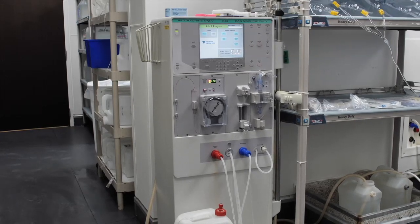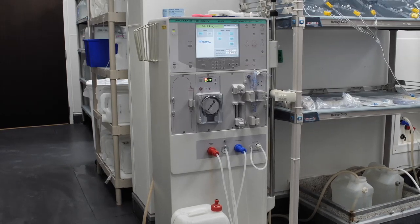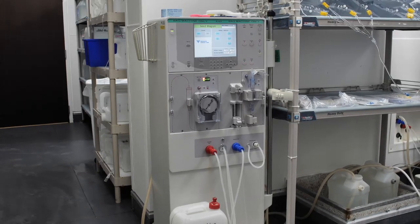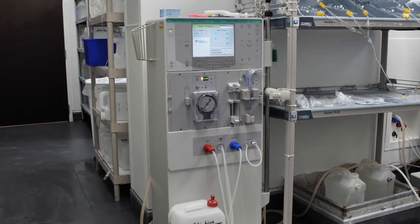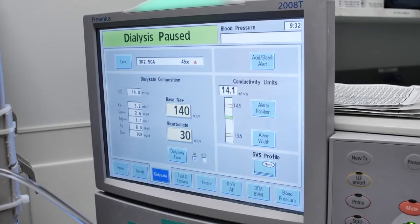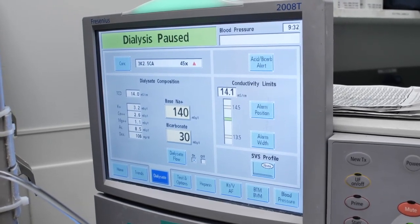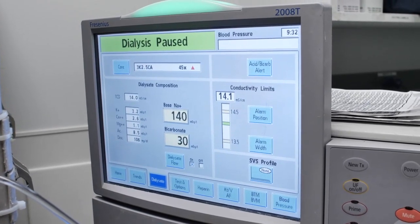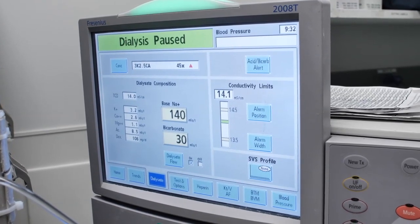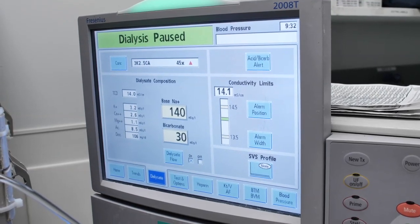This solution is a replication of the standard dialysate used during intermittent bicarbonate hemodialysis with the correct ionic composition and physiological temperature. Conductivity is set at a sodium concentration of 140 mEq per liter, potassium is 2-4 mEq per liter, bicarbonate is 30 mEq per liter.